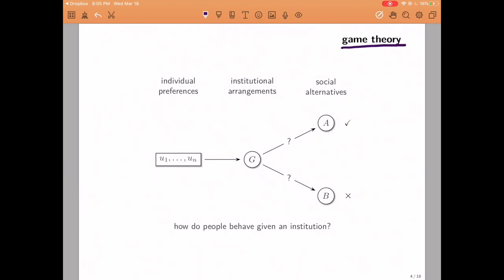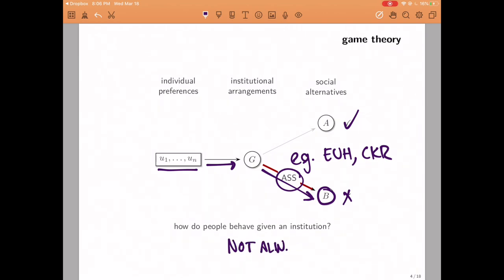The specific institutional arrangements of the different mechanisms that we are considering can be captured by the rules of a game. Then we can use game theory to think about how to map how the utilities or the preferences of the individuals are going to be combined with these institutional arrangements to determine what is the actual behavior that we would observe if we were to implement this mechanism. In order to do so, we will be using the assumptions that we have talked about, such as the expected utility hypothesis or common knowledge of rationality. And one thing that may happen is that once we combine a specific game with the preference of the players and with these assumptions, we end up with an outcome that is not the outcome that we wanted to achieve given our social welfare function.